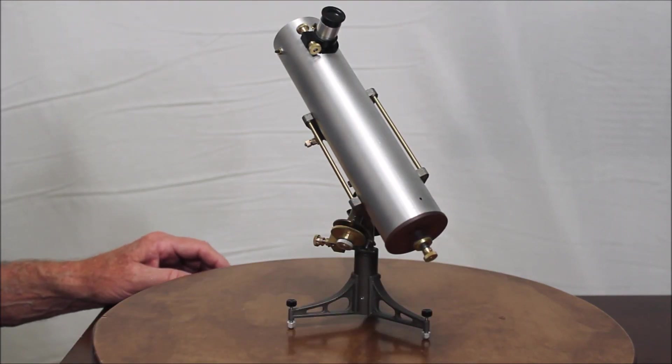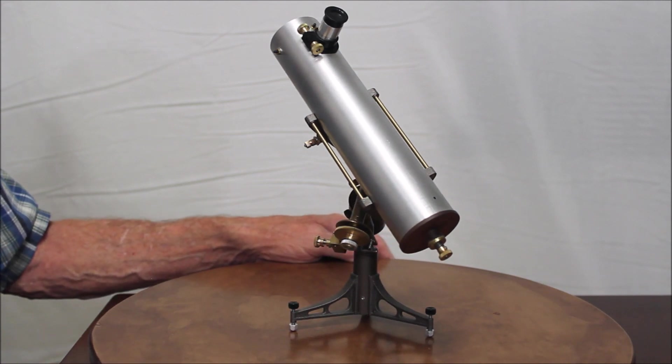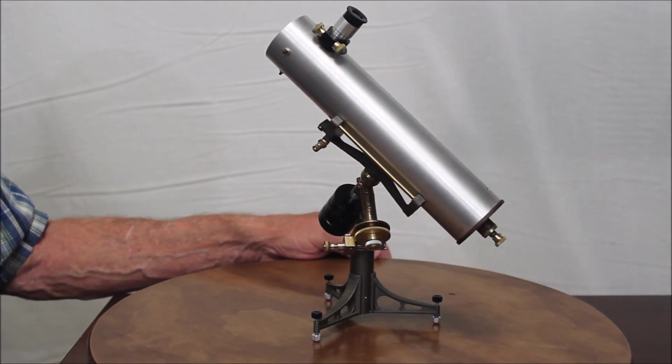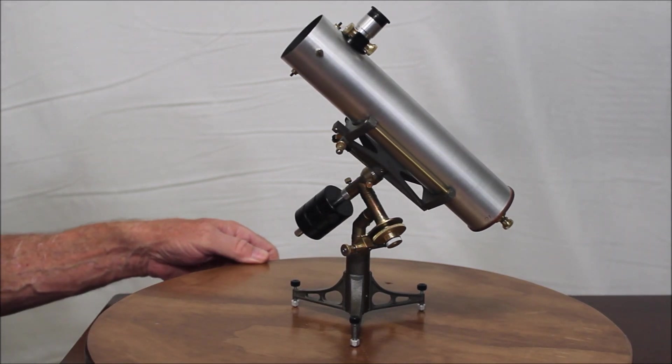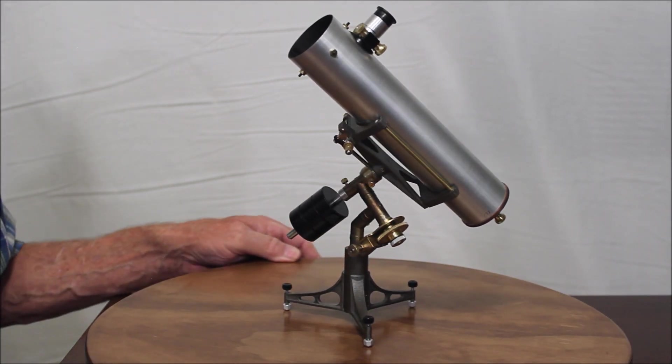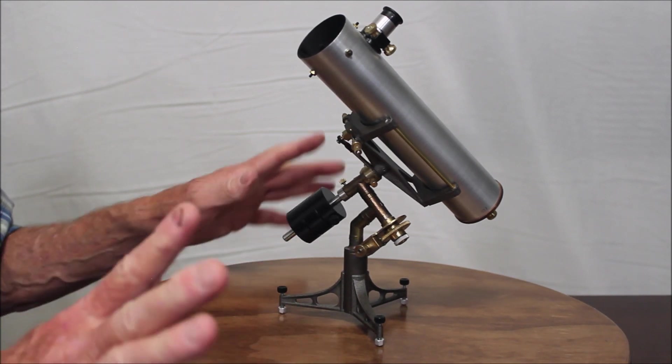Instead the eyepiece is fixed and that's how you focus right there. By the way the thing has a very nice image. I mean it's a spherical mirror but in this diameter an f6 spherical mirror delivers a very nice image. And I was able to resolve at least one of Jupiter's moons the other night with no problem even with the glare of Jupiter.